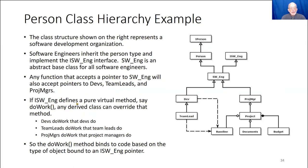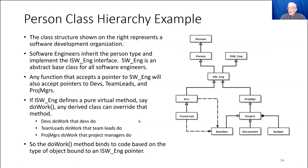If iSoftwareEngineer defines a pure virtual method, say, do_work, any derived class can override that method. Devs do work the way devs do it. Team leads do work the way team leads do it. Project managers do work the way project managers do. They're each defining that do_work function for which we have a contract in this interface. So if I have a pointer to this interface bound to a dev and I call do_work, it's going to do work the way a dev does. If my pointer is bound to a project manager, it's going to do work like a project manager does.